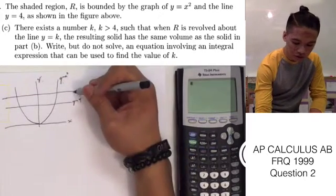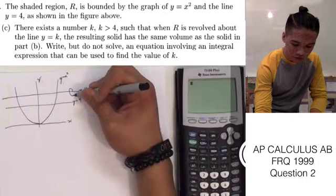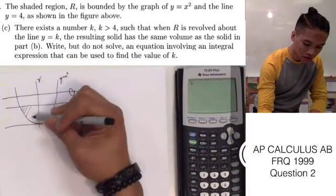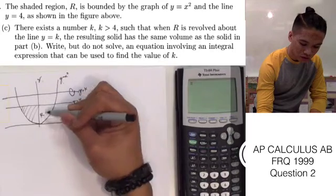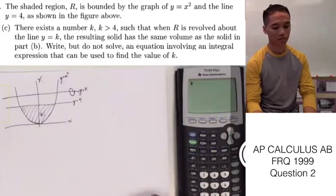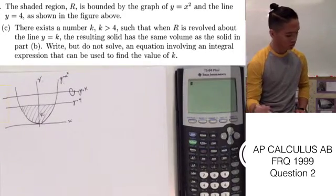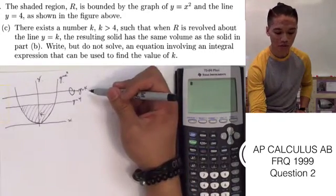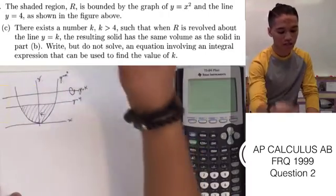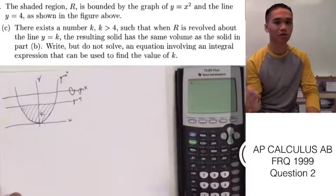And what we're doing is revolving this area of R about y equals k. And what we're trying to find is at what value of k is this revolution going to give the same volume as that we solved in part B.